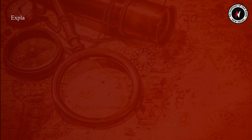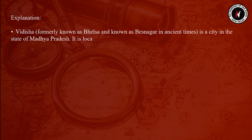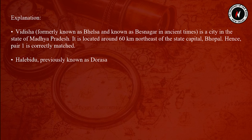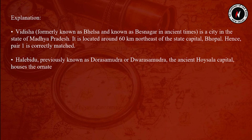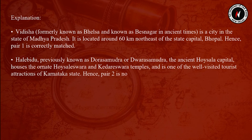Vidisha, formerly known as Bhilsa and as Besnagar in ancient times, is a city in Madhya Pradesh located around 60 km northeast of Bhopal. Hence pair 1 is correctly matched. Halebidu, previously known as Dorasamudra or Dwarasamudra, the ancient Hoysala capital with ornate Hoysala and Kedareshwar temples, is in Karnataka state — so pair 2 is not correctly matched.